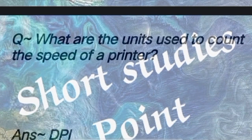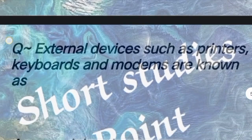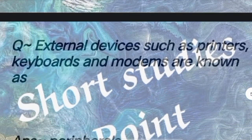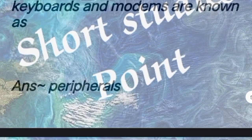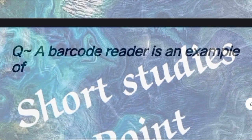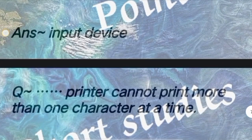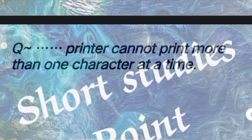Next question: What are the units used to measure the speed of a printer? Answer: DPI. Next question: External devices such as printers, keyboards, and modems are known as? Answer: Peripherals. Next question: A barcode reader is an example of? Answer: Input device.